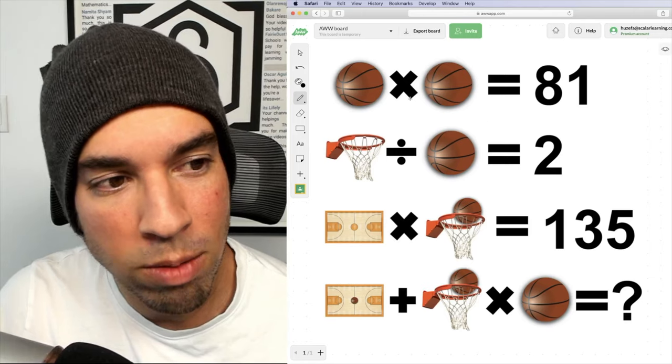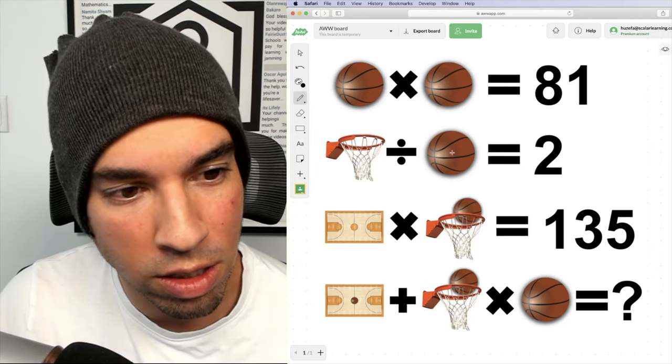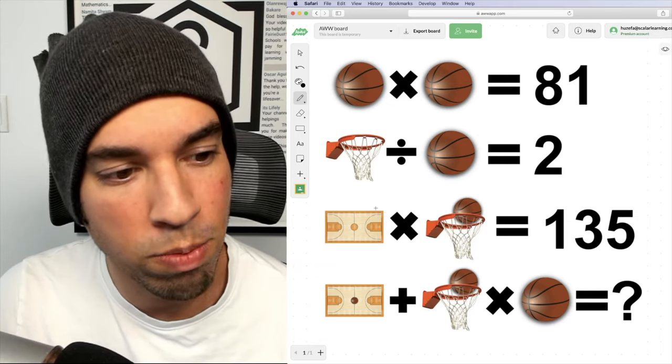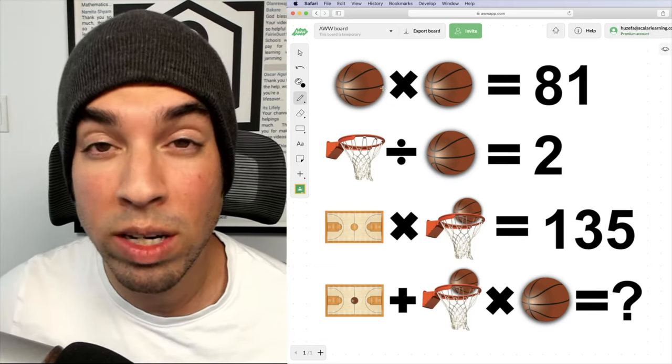This is another basketball themed one and we want to go through and figure out all the values of each of these individual items: the basketball, the hoop, and the court. And that way we can then solve that final equation at the bottom.